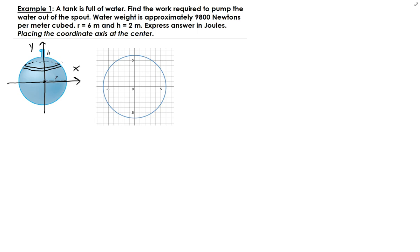And this is going to have a thickness of delta y, and we're going to assume that this is a height of y. Now keep in mind this is positive 6 up here and negative 6 down here, based on how we position the coordinate axis.